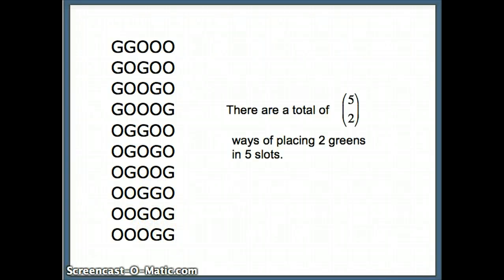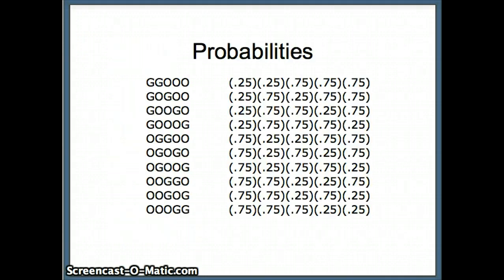In essence, we have five choose two. Why? There are five locations — first, second, third, fourth, fifth — and we have to select two locations for the greens. So how many ways can we select two locations out of five? That would be five choose two.